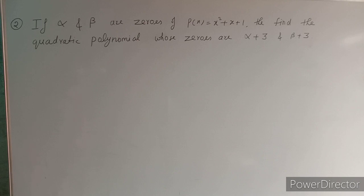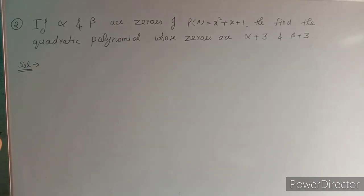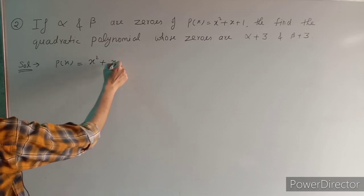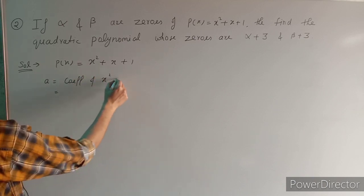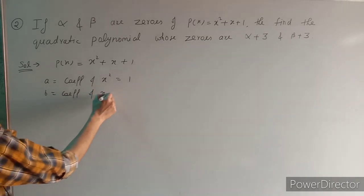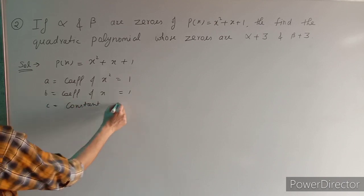Here the zeros of x² + x + 1 cannot be found by splitting the middle term. We can use the quadratic formula, but we will study that in Chapter 4. So for now, we use the coefficient method. For p(x) = x² + x + 1: a = coefficient of x² = 1, b = coefficient of x = 1, c = constant = 1.